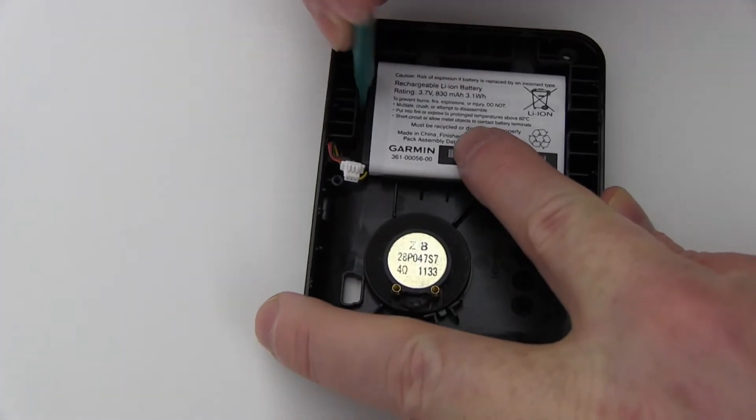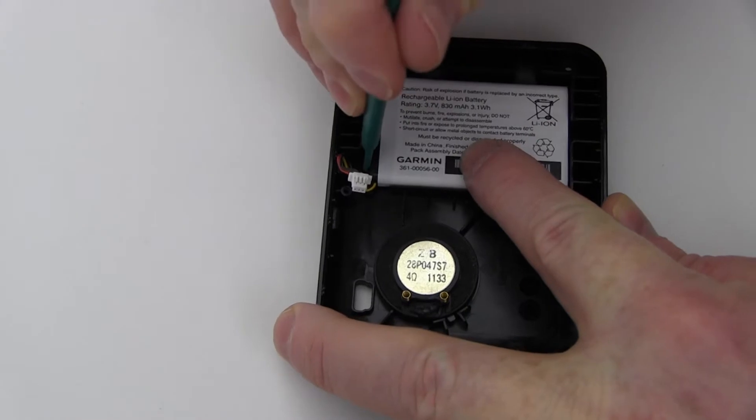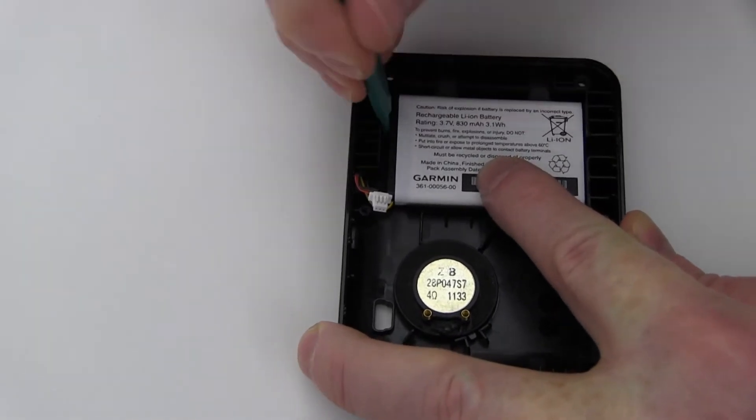If you find the adhesive bond too strong, you can use a hairdryer on the back of your Garmin's case to loosen the adhesive.